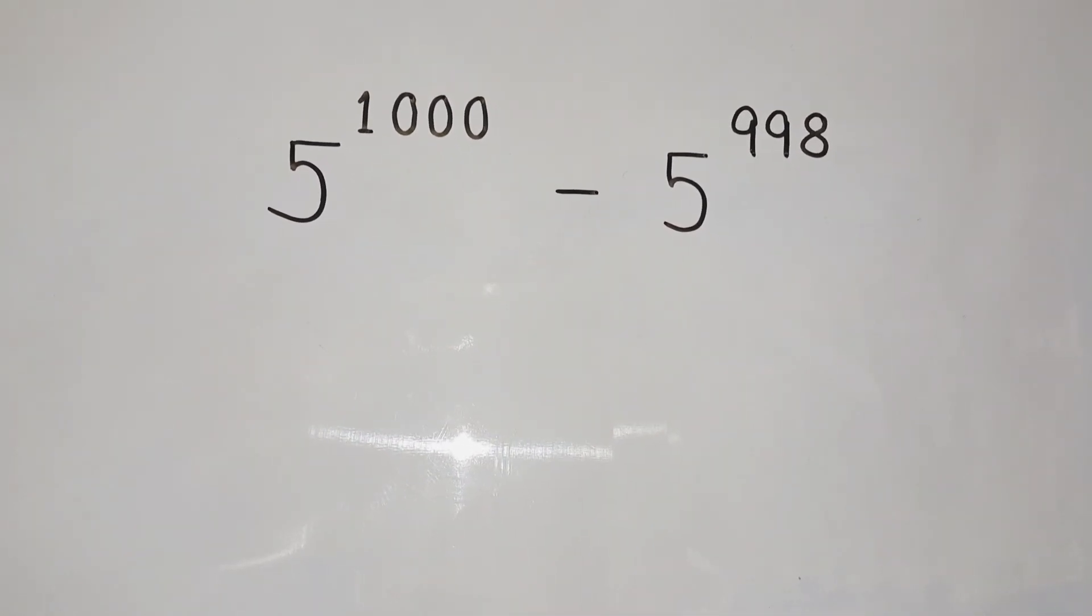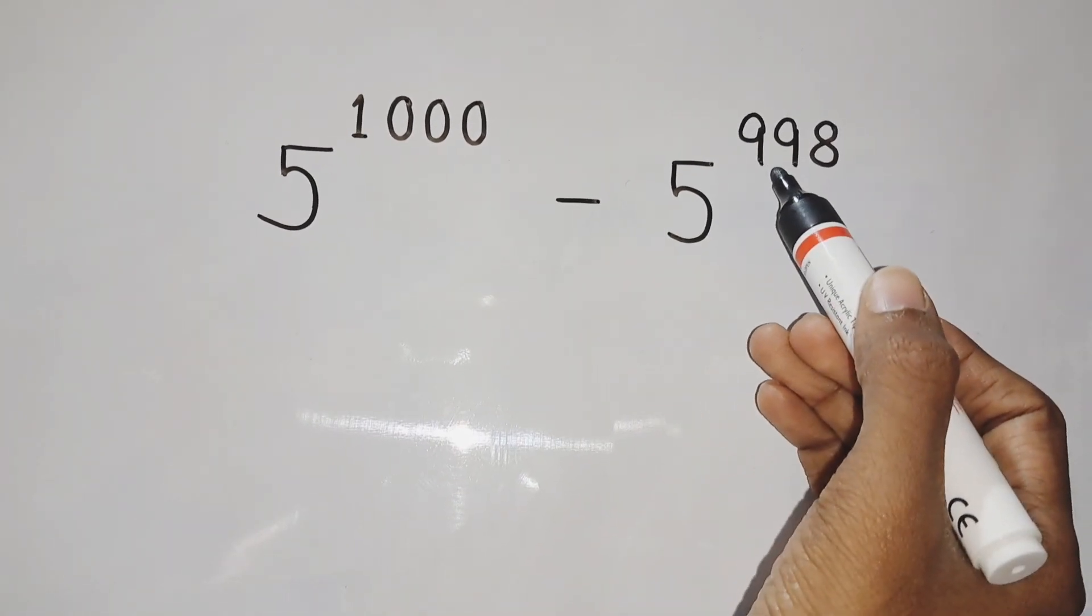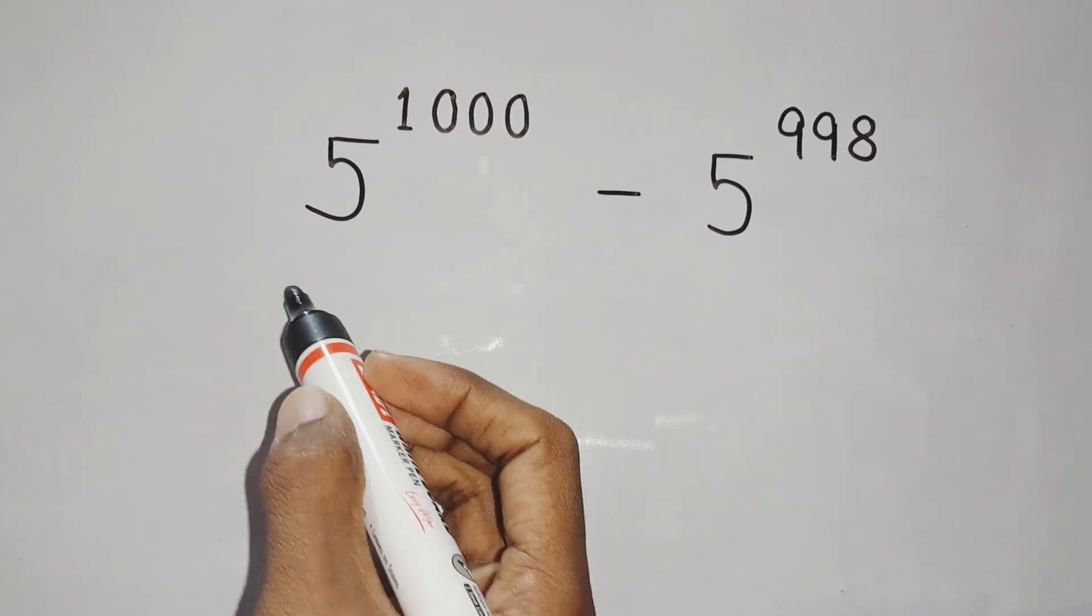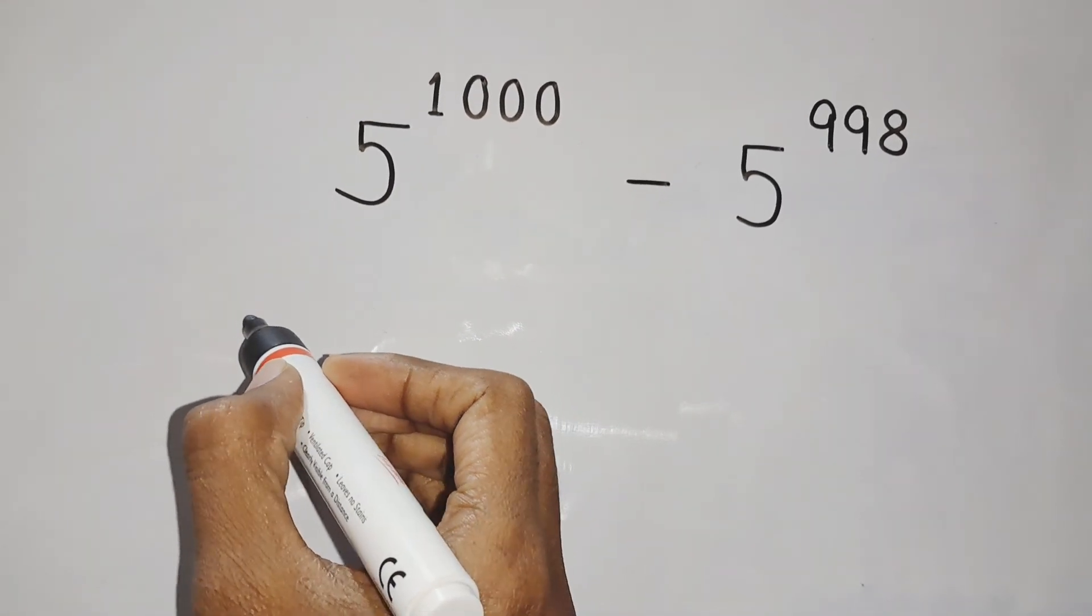Hello everyone, today we are going to solve this problem which is 5 to the power 1000 minus 5 to the power 998, and most probably many are going to get confused here.